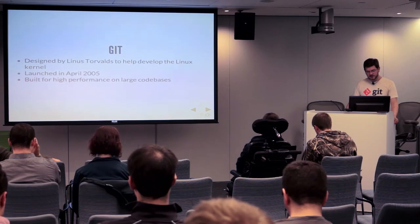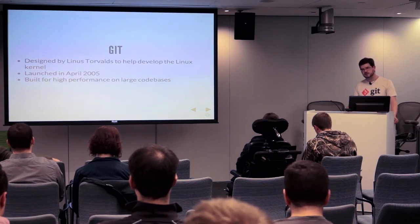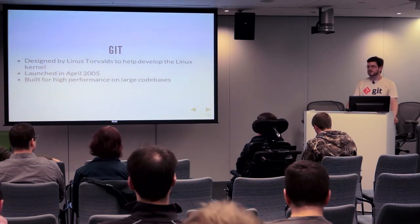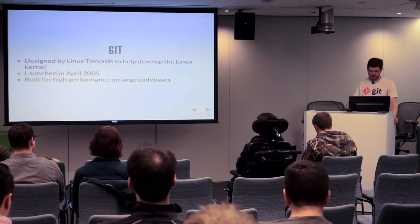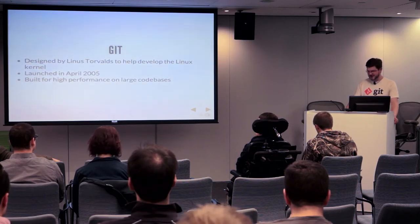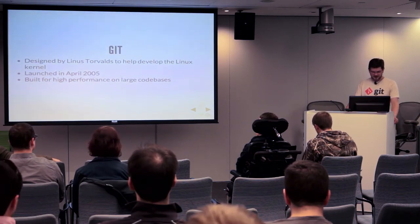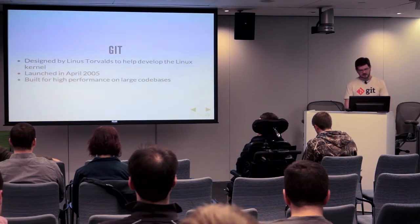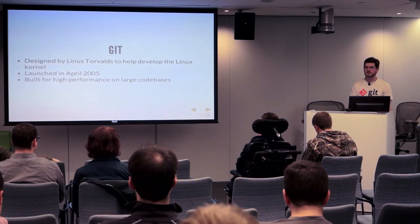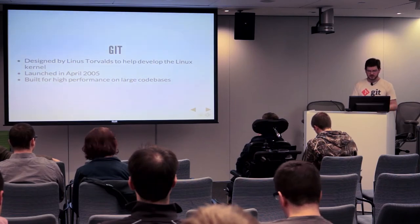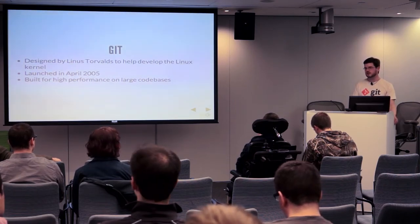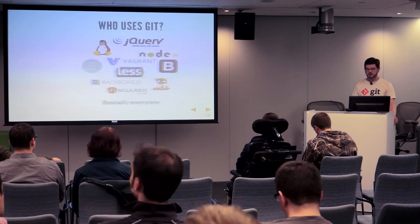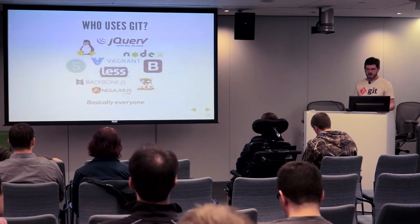Tools like Mercurial and Git sprung up in response to the lack of a good distributed version control system. Git specifically was designed by Linus Torvalds to manage the Linux kernel — a project with hundreds of people working on it concurrently all over the world. There wasn't an existing version control system he was allowed to use after the falling out with BitKeeper. Git was designed at least partially to be everything that CVS was explicitly not. It's been around for eight years and has really exploded over the past half decade.